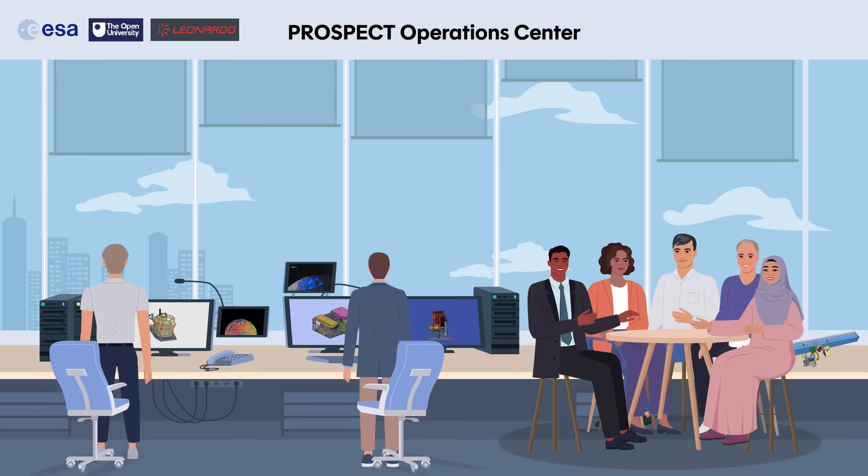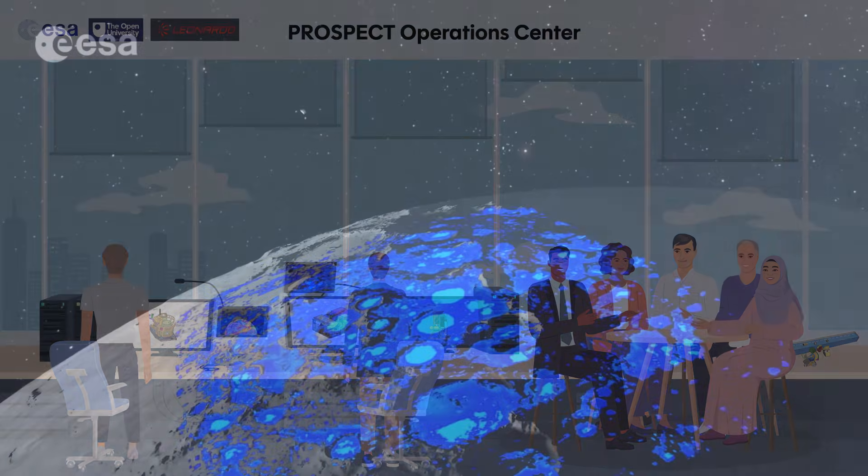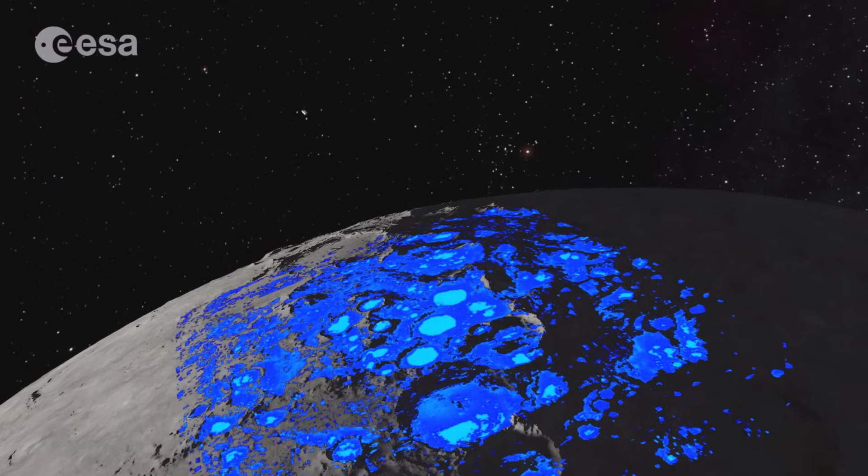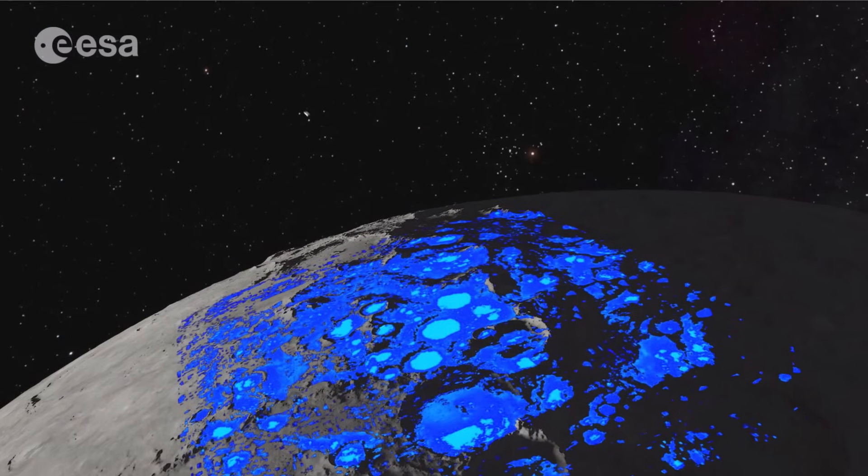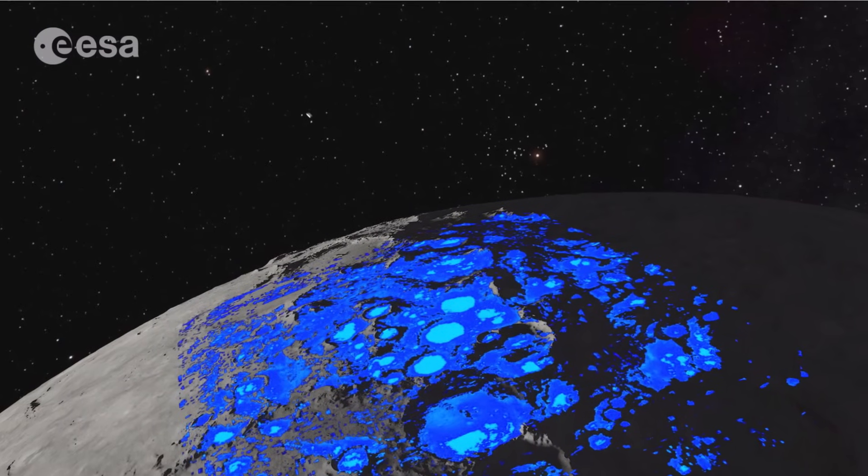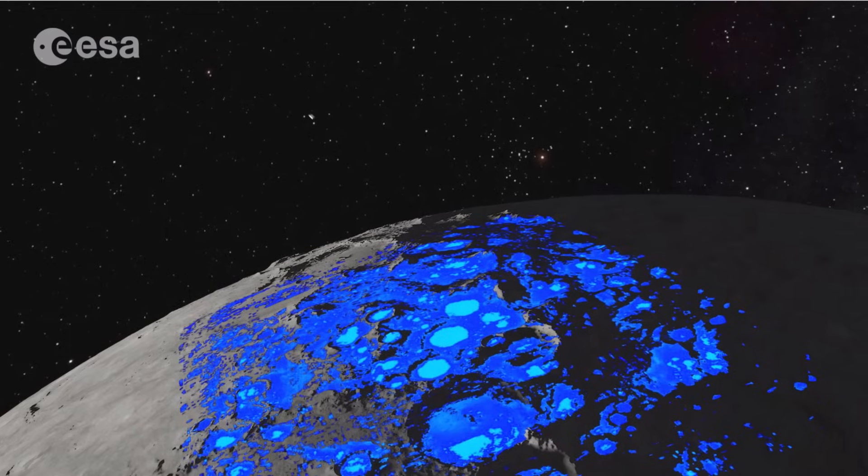Together, these components will allow the Prospect science team to develop a comprehensive understanding of the lunar environment. They will play a key role in exploring the Moon's polar regions, where useful resources including water ice could be abundant.